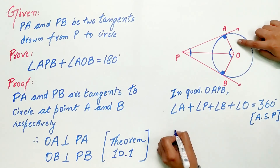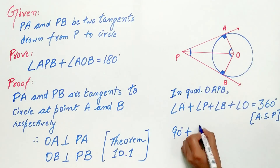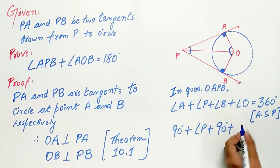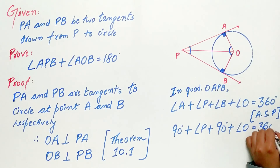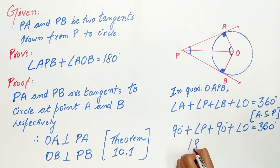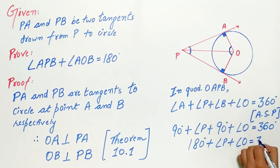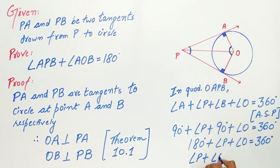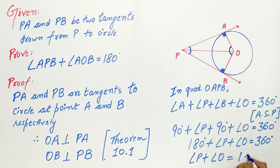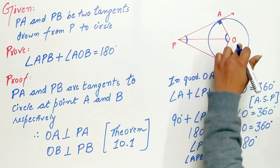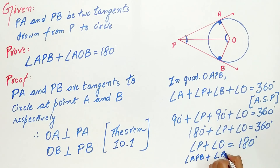Angle A is 90 degrees, angle B is 90 degrees, and angle P and angle O are unknown. So 90 degrees plus 90 degrees is 180 degrees, plus angle P plus angle O equals 360 degrees. Therefore angle P plus angle O equals 360 minus 180, which is equal to 180 degrees. Hence angle P is angle APB and angle O is angle AOB, which together equal 180 degrees.